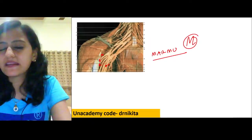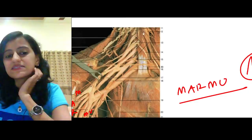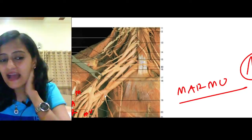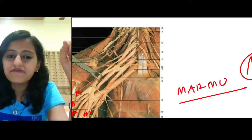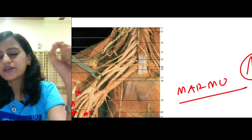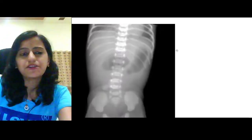Important cadaveric relation: the scalenus anterior muscle — behind it (scalene triangle) lies the subclavian artery and brachial plexus. The subclavian vein is in front, not part of the scalene triangle. The phrenic nerve is anterior to the scalenus anterior — very important.